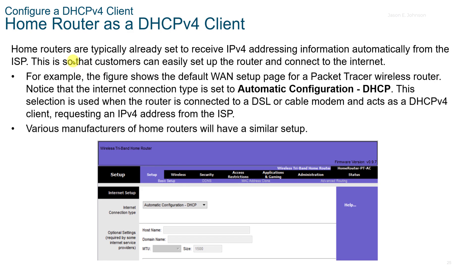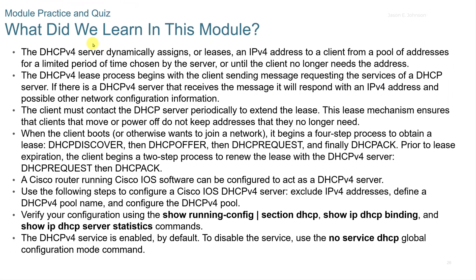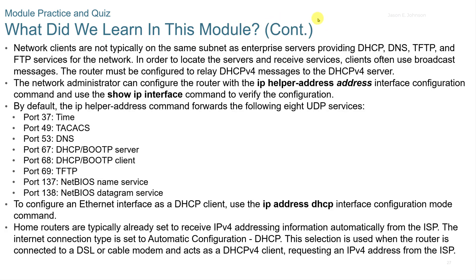On a Cisco home router, they are typically already set to receive v4 addressing information. You can also look for automatic configuration via DHCP, or set it to manual and configure a DHCP server on a home router as well. You can pause the video at this point to review the module summary slides.